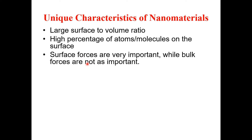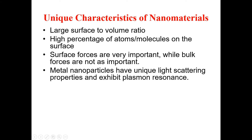Metal nanoparticles — as one kind of nanomaterial — have unique light scattering properties and exhibit plasmon resonance. What is plasmon resonance? We will discuss that in full detail in the coming lecture. This is a key characteristic of nanoparticles: that they have unique light scattering properties.